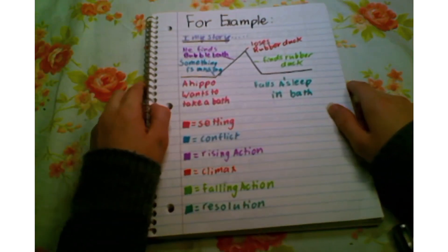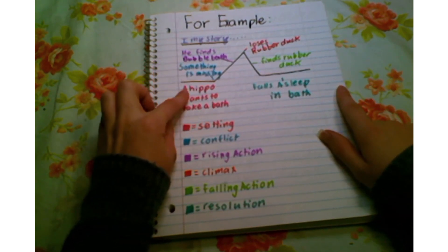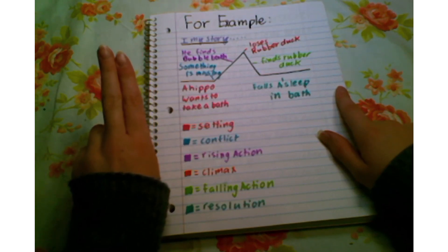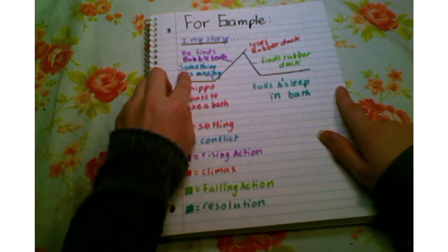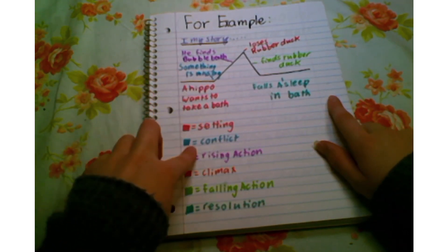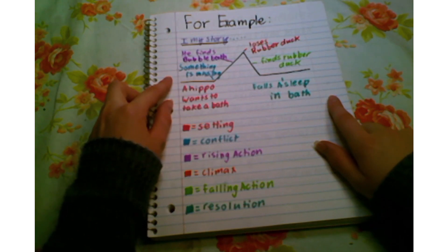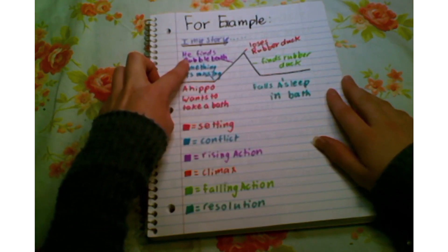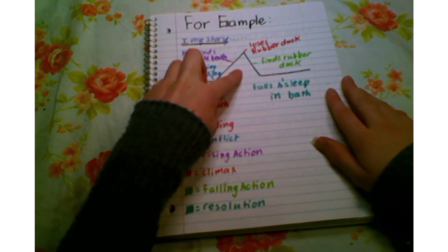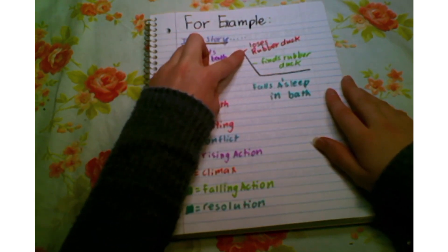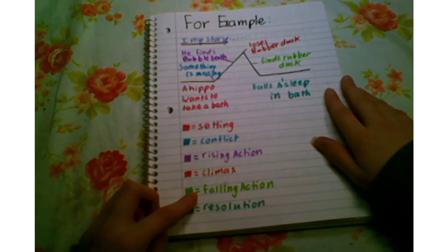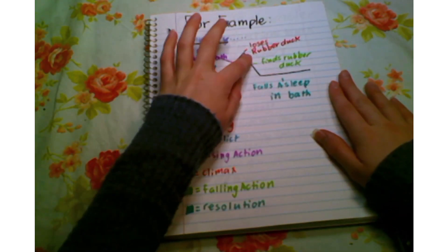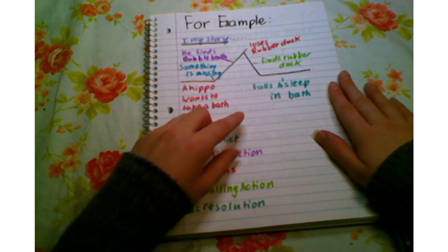For example, in my story I have a hippo who wants to take a bath. The character is a hippo, what he wants is to take a bath, and the setting is a bathroom. The conflict is that something is missing from his bath — he doesn't know where his bubbles are. The rising action is he finds his bubble bath but accidentally pours too much and loses his rubber ducky. The climax, the most exciting part, is that he loses his rubber ducky. The falling action is he finds his rubber duck, and the resolution is that he falls asleep in his bath.